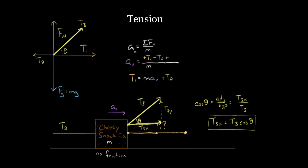Plugging T3 cosine theta into Newton's second law with a positive sign (since it points right), I add it to the equation. Solving for T1 algebraically: multiply both sides by m to get m times a-zero, add T2, then subtract T3 cosine theta. This makes sense — T1 decreases because T3 is helping pull to the right. You can keep adding forces — even friction — as a force to the left, and just continue using Newton's second law to solve for the tension you want.